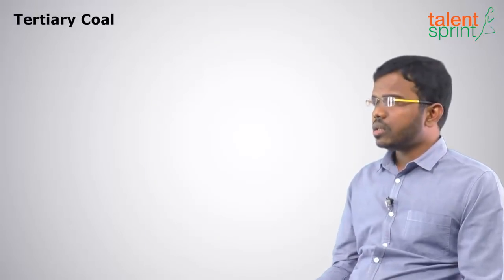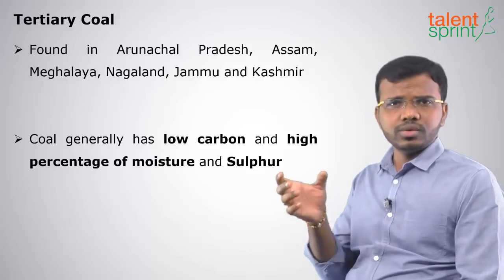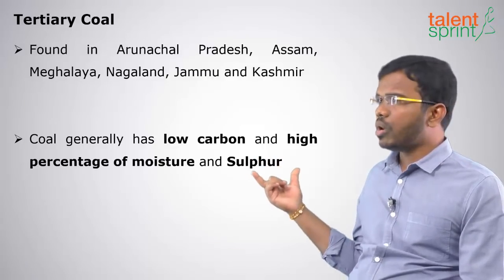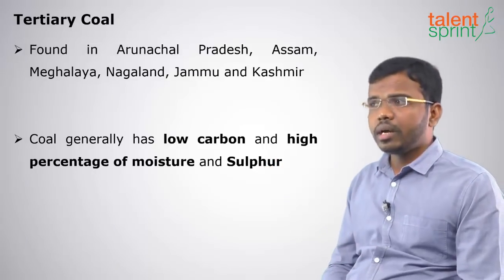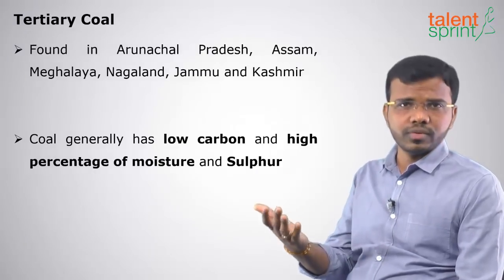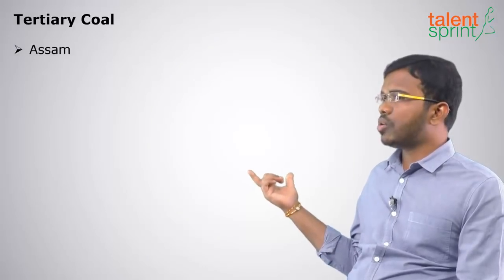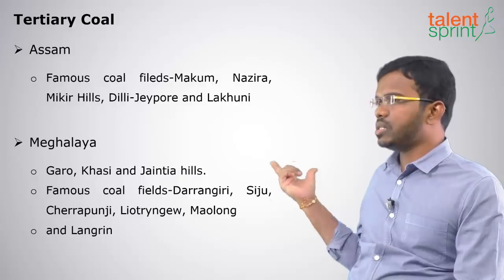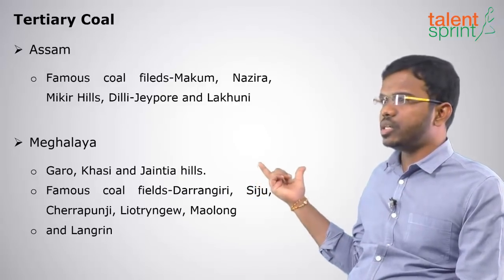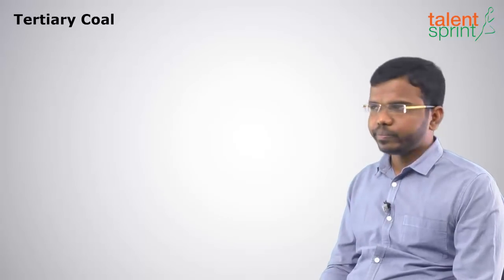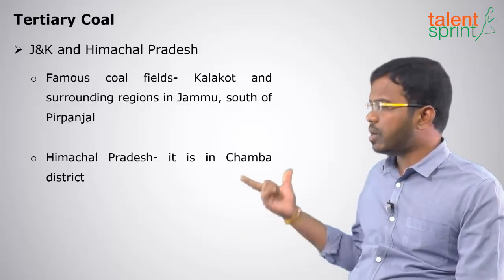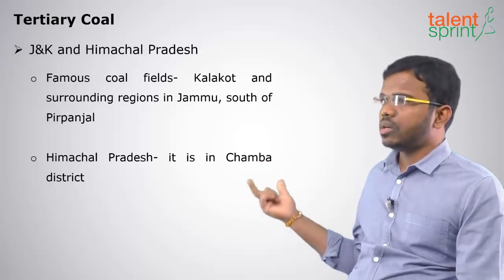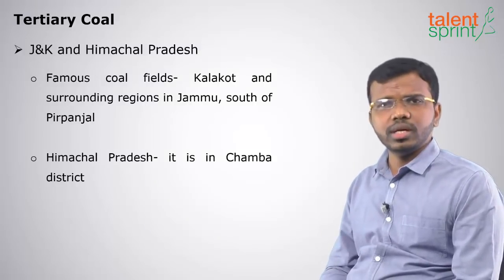Tertiary coal is newer — around 60 million years old — and is found in Arunachal Pradesh, Assam, Meghalaya, Nagaland, Jammu and Kashmir. Tertiary coal has lower carbon content and a high percentage of moisture, as it is still undergoing metamorphosis. In Assam, it is available in the fields of Makum, Nazira, and Mikri Hills. In Meghalaya, it is found in Garo, Khasi, and Jaintia Hills — famous fields include Darangiri, Siju, Simsang, Cherrapunji, and Langrin. In Himachal Pradesh, it is found in Shimla district, and in Jammu and Kashmir at Kalakot and south of Pir Panjal.